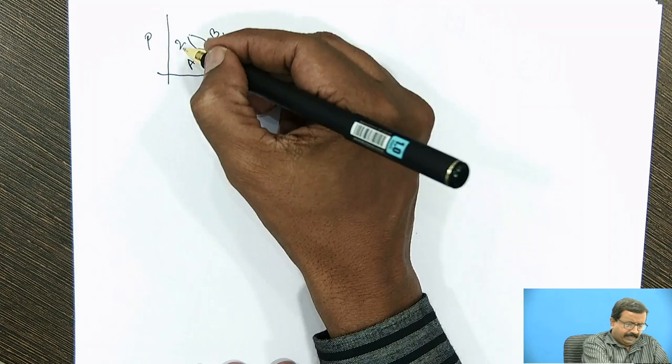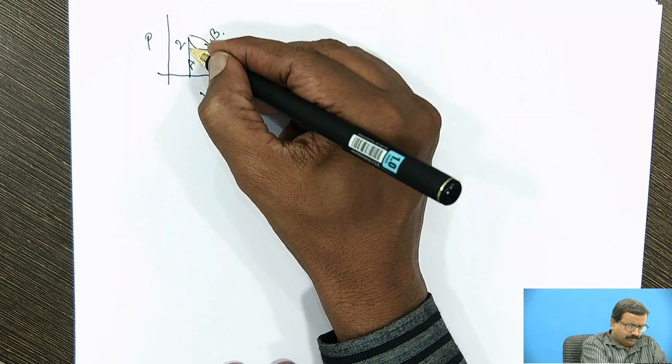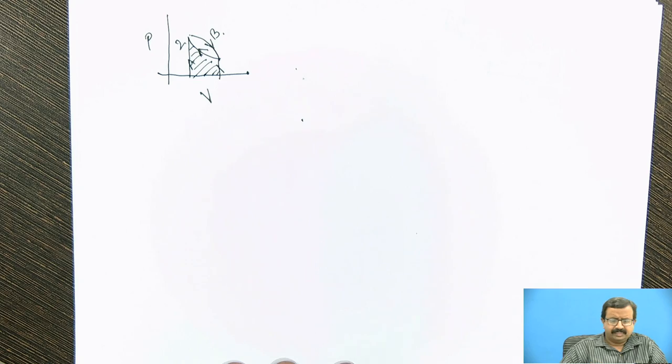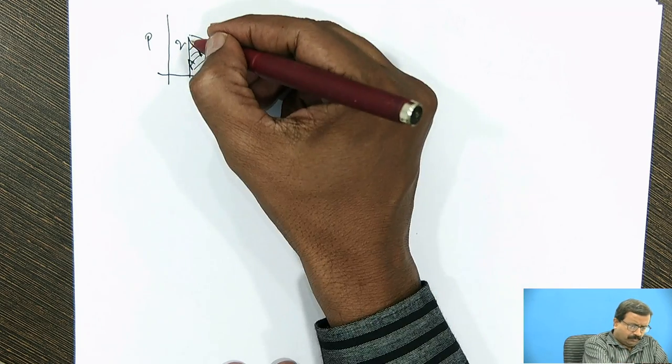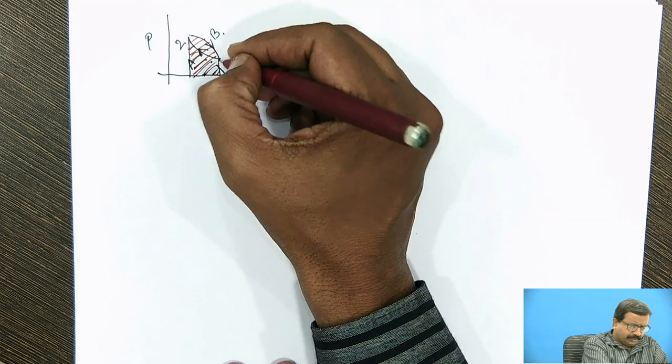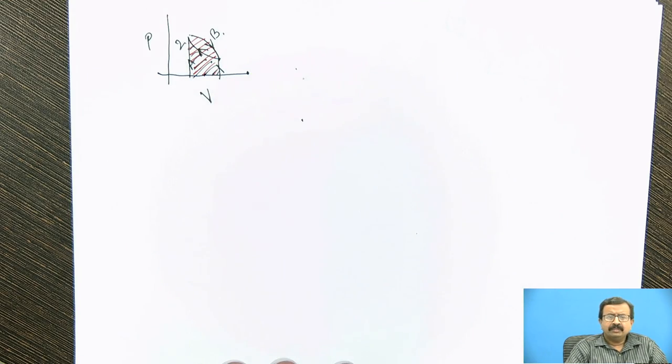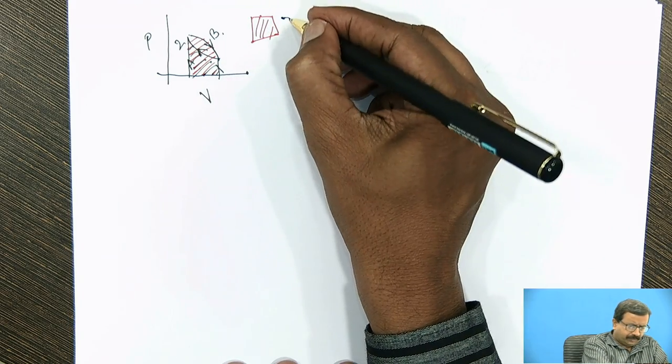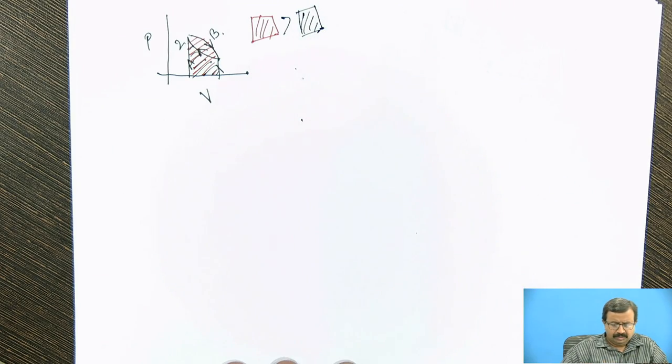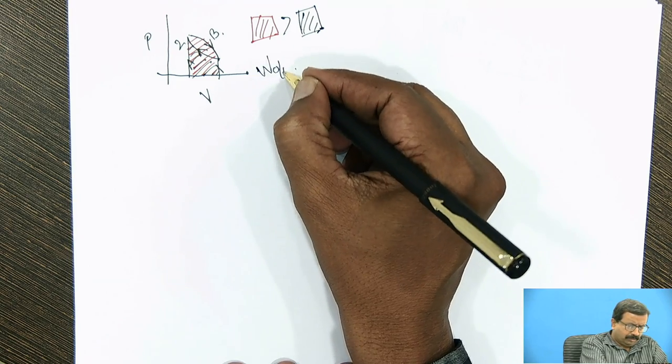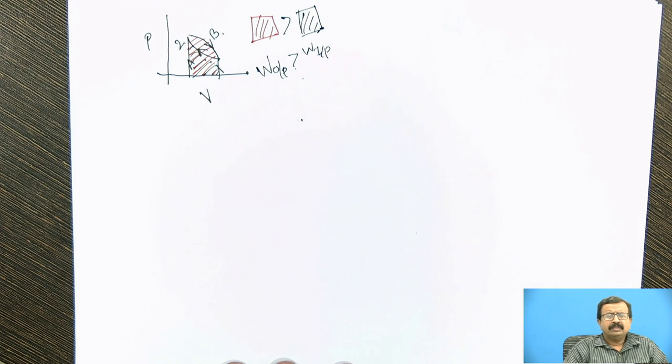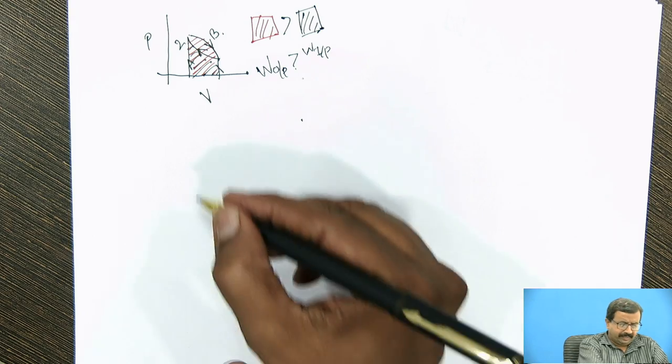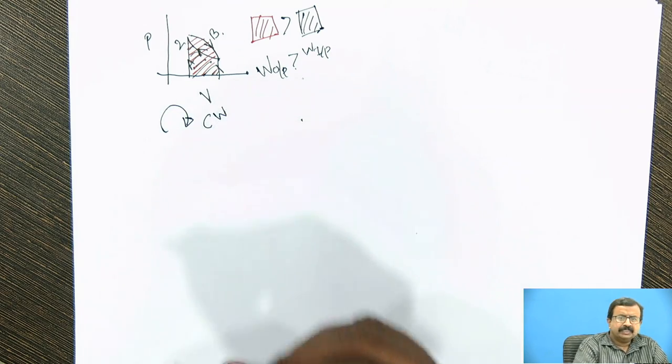So if I take area under process 1 to 2 and show it by shaded region in black, and find the area under process 2 to 1 by path b, then you will find that this area shaded in red is greater than the area in black. So what does it indicate? That work output is greater than work input. Now if this is the situation, what is the net work? Positive. So this is a power producing cycle because it is clockwise.